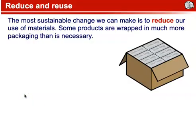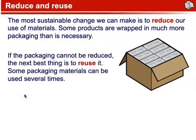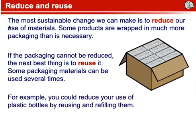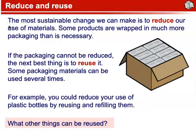Reduce and Reuse. The most sustainable change that we can make is to reduce our use of materials. Some products are wrapped in much more packaging than is necessary. If the packaging cannot be reduced, the next best thing is to reuse it. Some packaging materials can be used several times. For example, you could reduce your use of plastic bottles by reusing and refilling them. What other things can be reused?